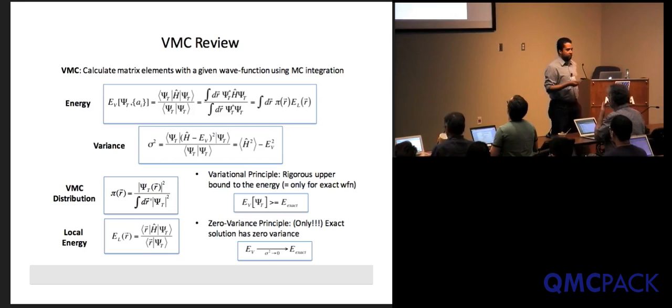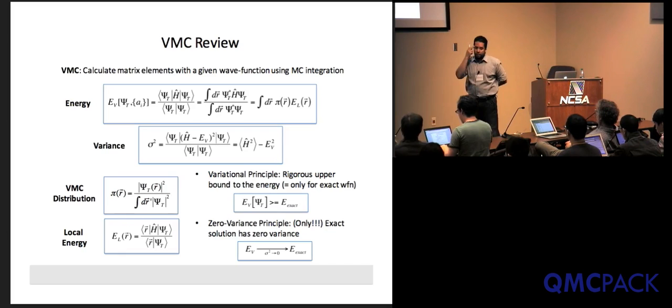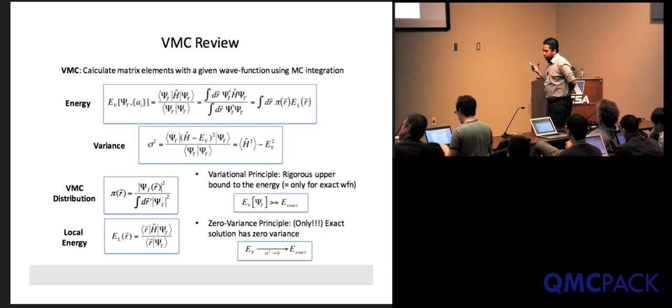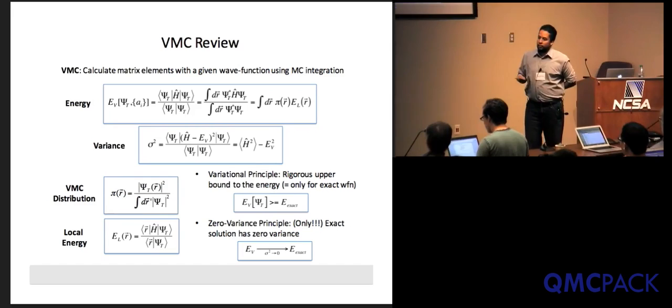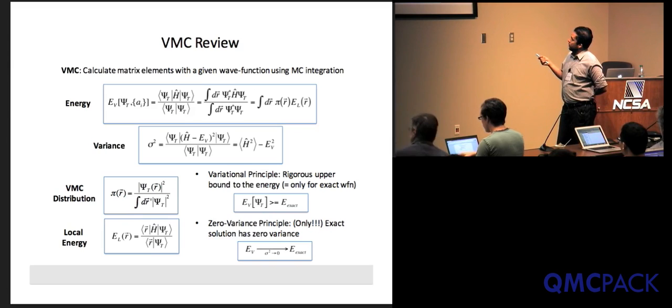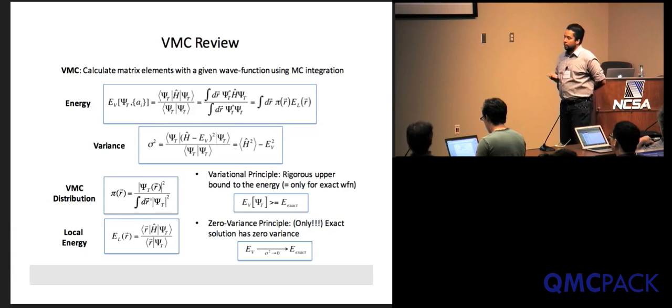This is a review of VMC. David already discussed this, but I want to set up some possibly different notation to use in this lecture. VMC is nothing more than the calculation of matrix elements of operators using specific trial wave functions. One benefit of Monte Carlo is that if you can write the wave function and evaluate it on a computer, it doesn't matter how complicated it is — you can perform variational Monte Carlo on it.